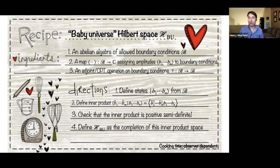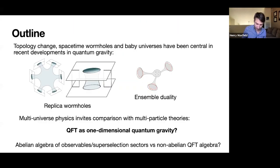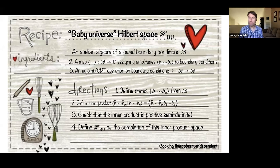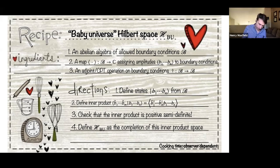I'm going to start with a review—probably a lot of this talk will be getting the background in place before we can put it to work in these one-dimensional theories. I'll review a recipe for building a Hilbert space of baby universes. The main purpose of today's talk is to make very explicit what the ingredients are, what choices go into it, and how the choices might differ between quantum field theory and quantum gravity.